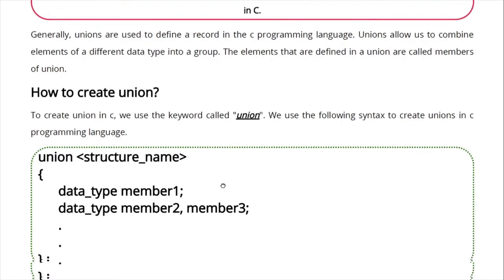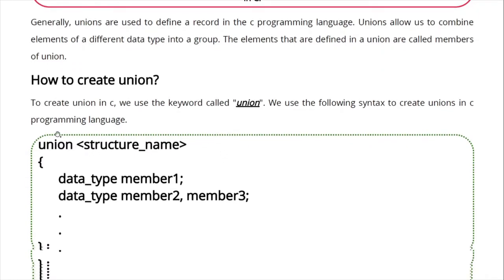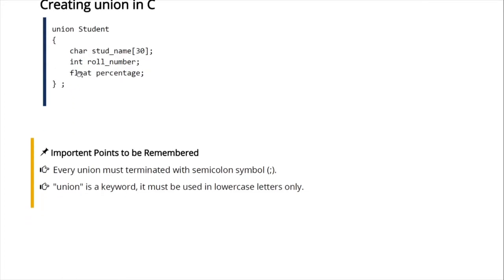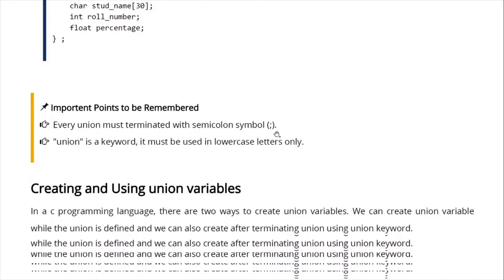The syntax is the same: union_name followed by data members, same as structure but with the 'union' keyword instead of 'struct'. For example: union student { char stud_name[30]; int roll_number; float percentage; }; — same as the struct definition but the keyword is 'union'. The union must be terminated with a semicolon, same as structure. The union keyword must be written in lowercase letters only.